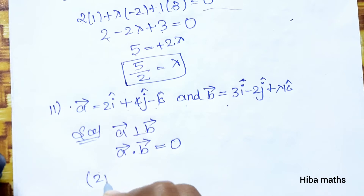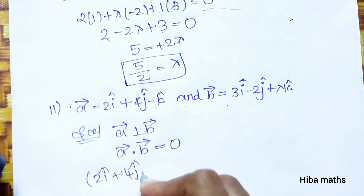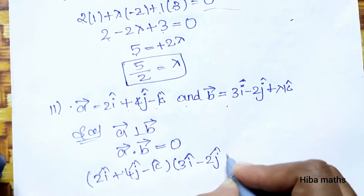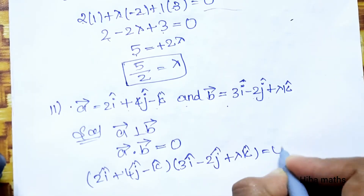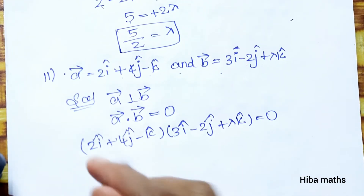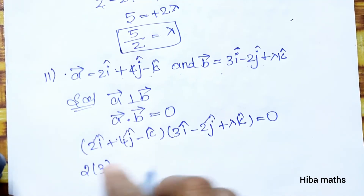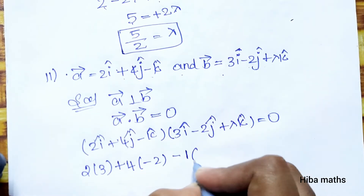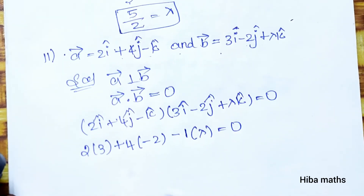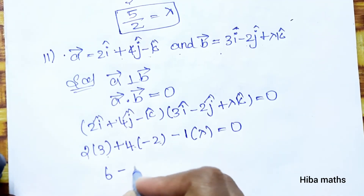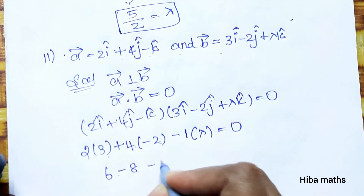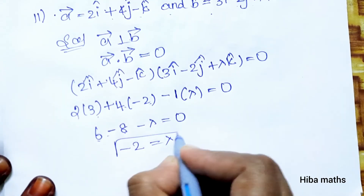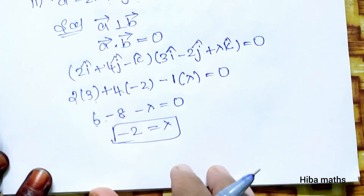Now let's multiply: 2 × 3 plus 4 × (−2) plus (−1) × λ equals 0. So 6 minus 8 minus λ equals 0, which gives minus 2 minus λ equals 0, and therefore lambda equals minus 2.